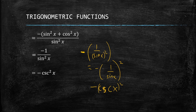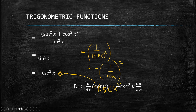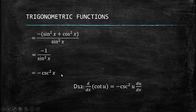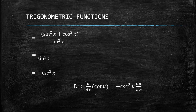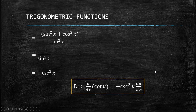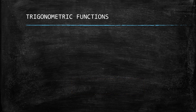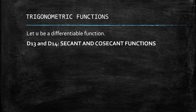Generalizing, the derivative of cotangent of u with respect to x equals negative cosecant squared of u times the derivative of u with respect to x, where u is a differentiable function. This is our D12. In the next video we will discuss the secant and cosecant functions — see you there.